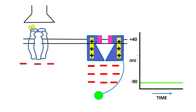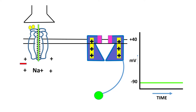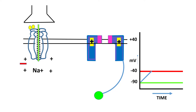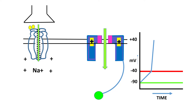When acetylcholine is released and binds to Nm receptors, a conformational change causes positive ions to enter, and the negativity is reduced from minus 90 to minus 40 millivolts — that is the threshold potential or end plate potential. At that potential it can no longer attract the positive charges inside the voltage-sensitive sodium channel, so the channel changes shape, the activation gate opens, sodium rushes into the cell, the inside becomes extremely positive — around plus 40 millivolts — and that is depolarization. In a time-dependent manner the inactivation gate swings shut, converting the channel to the inactivated state.